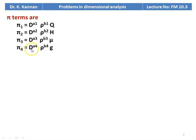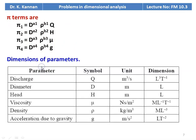Dimensions of variables: discharge Q has dimensions L³ T⁻¹; diameter D is L; head H is L; viscosity mu is M L⁻¹ T⁻¹; density rho is M L⁻³; acceleration due to gravity g is L T⁻².